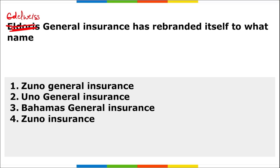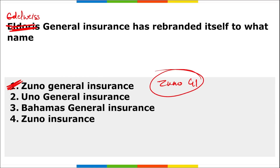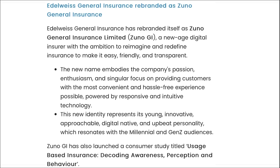Next: Edelweiss General Insurance has recently rebranded themselves to Zuno General Insurance — also known as Zuno GI. The new name of Edelweiss General Insurance is Zuno General Insurance. This is a new-age digital insurer with the ambition to reimagine and redefine insurance to make it easy, friendly, and transparent. The new name embodies the company's passion, enthusiasm, and singular focus on providing customers with the most convenient and hassle-free experience possible, powered by responsive and intuitive technology.